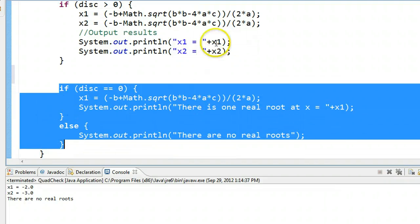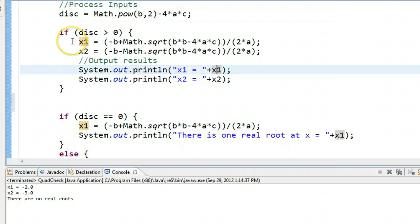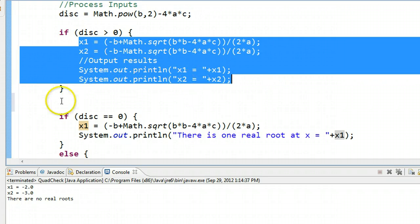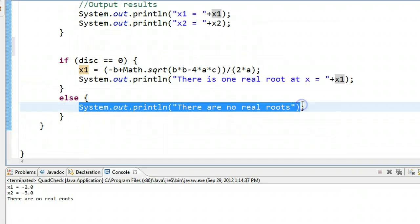So what the program actually does is it says if the discriminant is greater than 0, which it is in this case, it executes that. And then it comes out of the structure, and it checks this if statement, which is not true. And so it then is going to run that else statement.